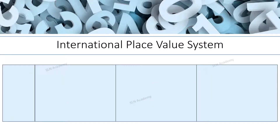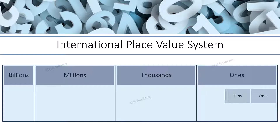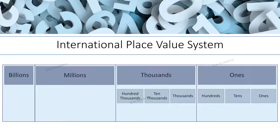Here, Ones, Thousands, Millions, and Billions are the Periods. The Ones period is divided into Ones, Tens, and Hundreds. The Thousands period is divided into Thousands, Ten Thousands, and Hundred Thousands.